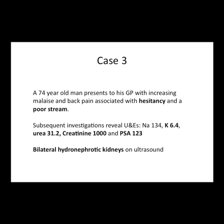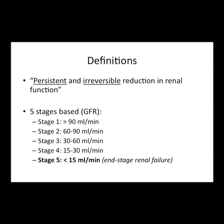Case 3 — the 74-year-old with post-renal obstruction. Increasing malaise and back pain, hesitancy and poor urine stream. He has a very high potassium as a complication of his renal failure. Looking at the ratio: here the creatinine is 10 times normal — this is a problem that's been going on for a long time. His PSA is 123 when normal is less than 4 — this man has a massive prostate, likely malignant, causing back pressure of urine. The ultrasound confirms bilateral hydronephrosis — back pressure — leading to renal failure.